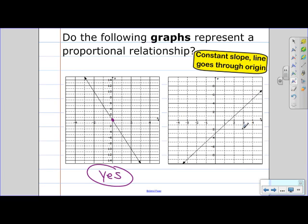And on this second graph, we do have a constant slope. But the origin is here at 0, 0 and the line does not go through the origin. So this would be a no.